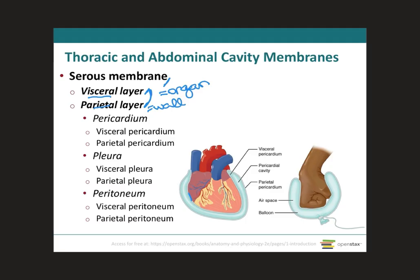To understand how these two membranes are continuous, consider putting a fist inside a half-filled balloon. You can see how part of the balloon is in contact with your fist — this represents the organ, like the heart, in contact with the inner lining. The outer lining is then in contact with the wall of the cavity. Between the two layers, like air in the balloon, there is a space called the serous cavity.